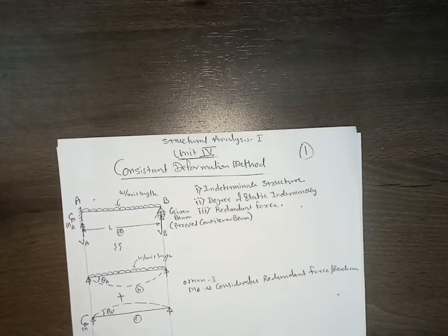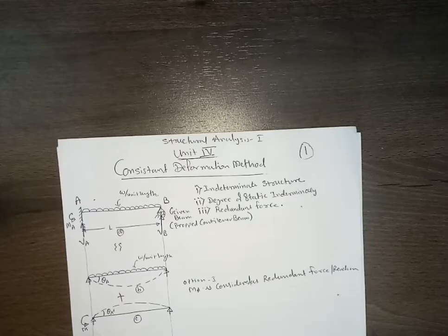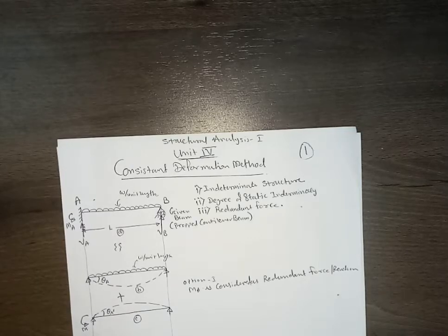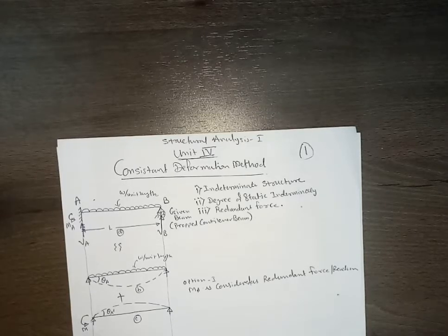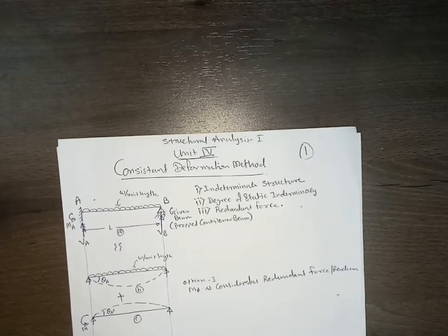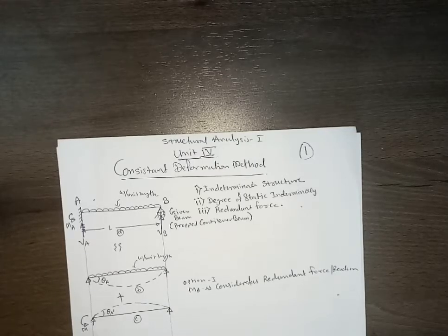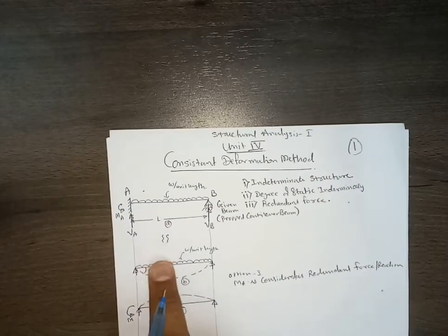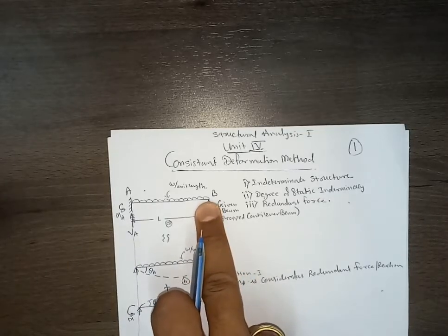Internal member forces in flexural members are shear force and bending moment, which can be calculated easily if you know the reaction components. However, if you have extra reactions or extra supports, it is not possible to calculate those support reactions using equilibrium conditions alone, and such structures are called indeterminate structures. The degree of static indeterminacy is the extra number of forces we have over and above the equilibrium equations.